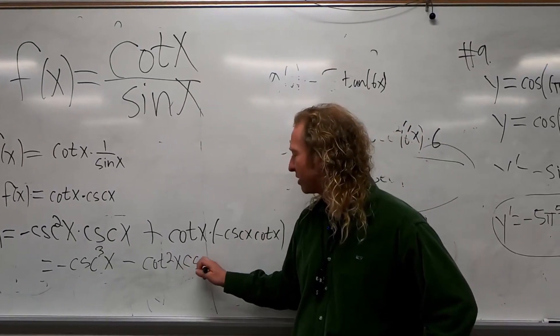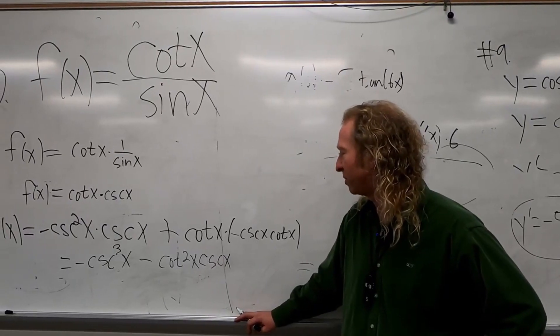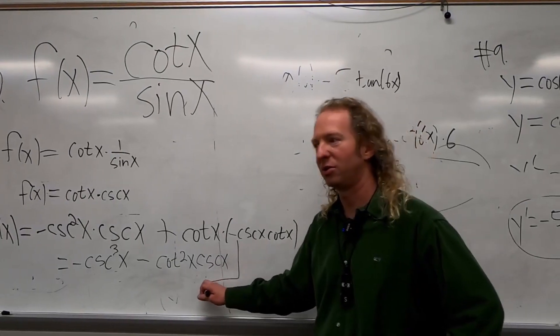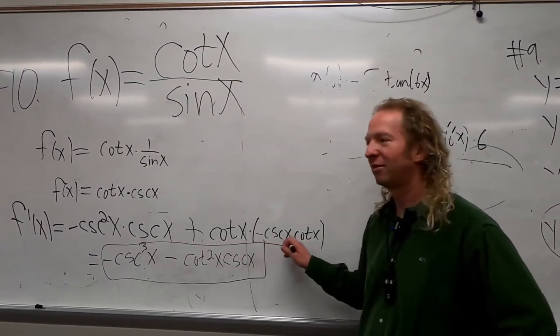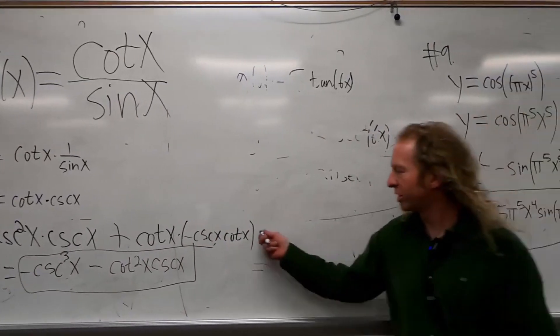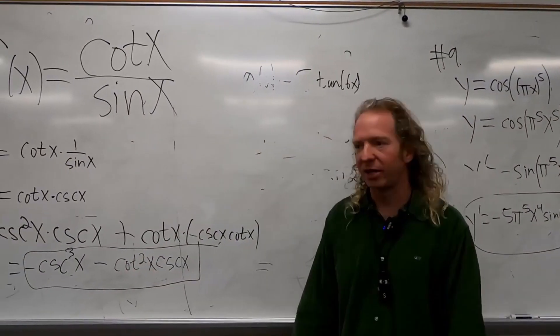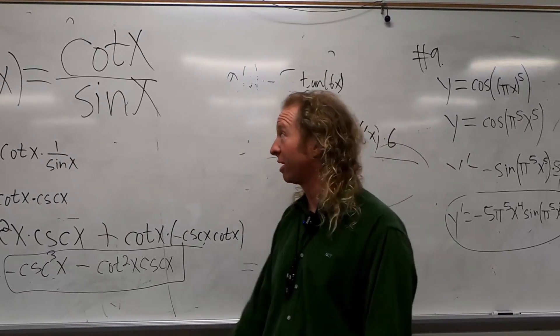You can probably rewrite this, like factor stuff out and do some identity type stuff, but I don't really want to. I think we should just stop there. So cotangent and cotangent is cotangent squared, right? That's how we got that. So nice problem. Pretty tough.